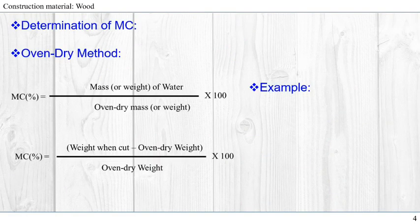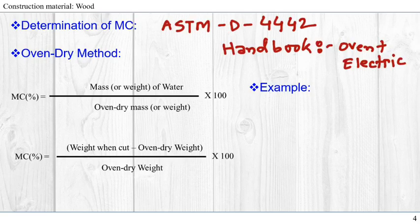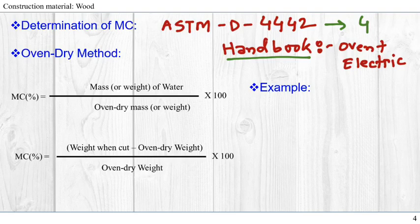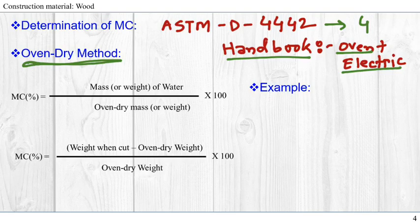So how do we determine the moisture content of wood? According to ASTM standard D4442, there are four different ways that we can determine the moisture content. In the USDA Handbook, two processes are explained: the oven dry method and the electrical method. The oven dry method is the most widely used and popular method, so we're going to talk about this one.